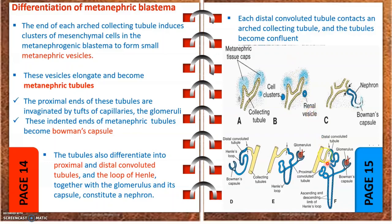Together with the glomeruli, all these parts constitute the nephrons. The distal convoluted tubule contacts an arched collecting duct, and the two tubes become continuous and confluent with one another.